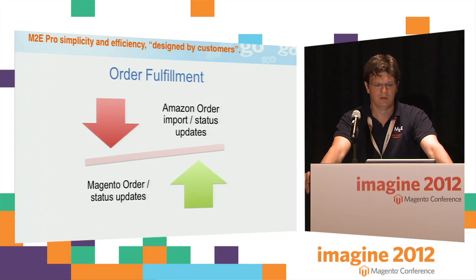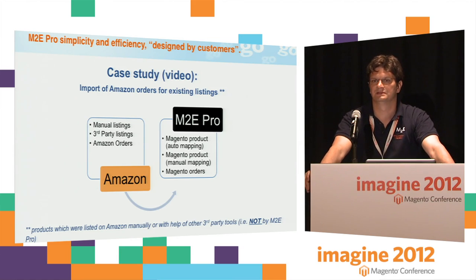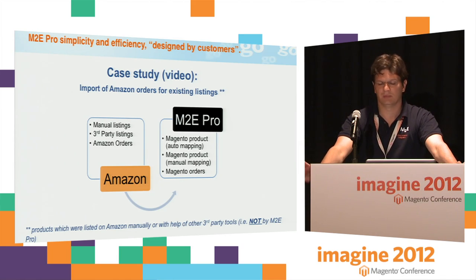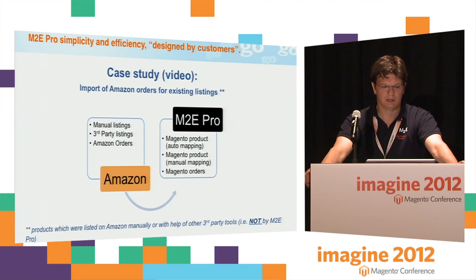For order fulfillment, for every Amazon order, we create a similar order in Magento, and then we synchronize status updates between those two systems. Now a quick case study: this is import of Amazon orders for existing listings — meaning third-party listings, products which were created by third-party tools or manually, not products published by M2E Pro. Imagine you have Amazon, you have some products listed there, and some orders have been placed recently. What our product will do is create Magento products, try to map those products automatically to a Magento catalog, and when it cannot, allow you to do this manually. It will also create Magento orders.